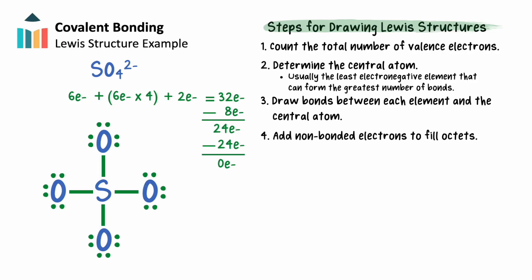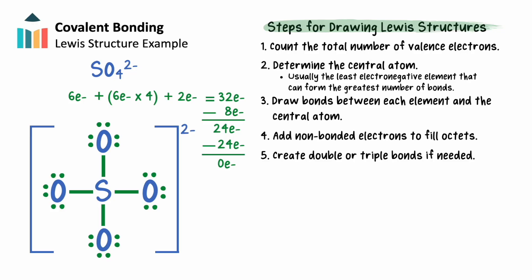To know if our structure is finished, we'll have to check for octets in each atom in the molecule. An octet means eight valence electrons, shown either as a bond or lone pair. Sulfur has its octet filled with eight valence electrons and its four bonds, and each oxygen has their octet filled with three pairs of electrons and a single bond. Because each of the octets of our atoms within our structure are filled, we do not need to create double or triple bonds. We'll need to add brackets and a negative two charge showing that the sulfate ion has an additional two electrons in its structure. Now our Lewis structure is complete.